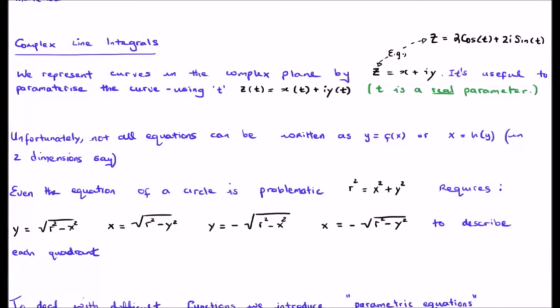When we move from the real axis to the complex plane we denote all points as z, this is the complex number z and it's x the real component plus i times y the imaginary component. For example, if I said z is twice cosine t plus twice i sine t, I would say that 2 cosine t is the x component or the real component and twice sine t is the imaginary component or the y component.